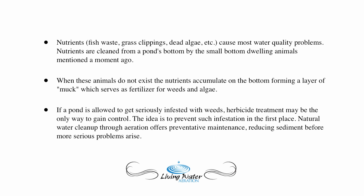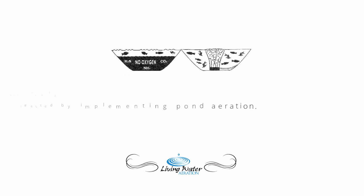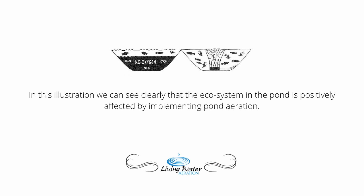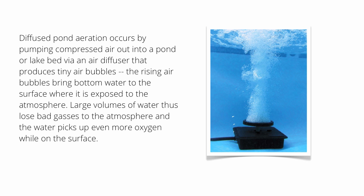Natural water cleanup through aeration offers preventative maintenance, reducing sediment before more serious problems arise. In this illustration, we can see clearly that the ecosystem in the pond is positively affected by implementing pond aeration. Diffused pond aeration occurs by pumping compressed air out into a pond or lakebed via an air diffuser that produces tiny air bubbles. The rising air bubbles bring bottom water to the surface where it is exposed to the atmosphere, allowing large volumes of water to lose bad gases and pick up even more oxygen.